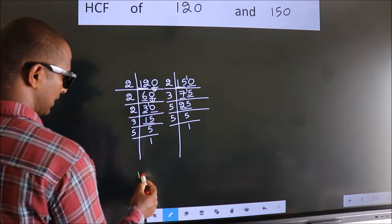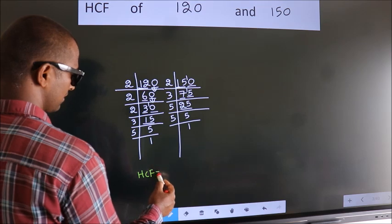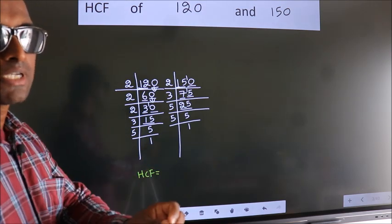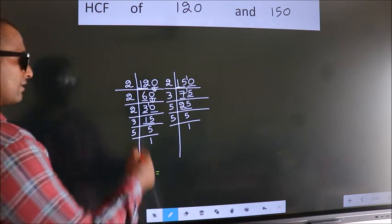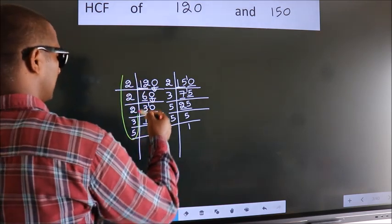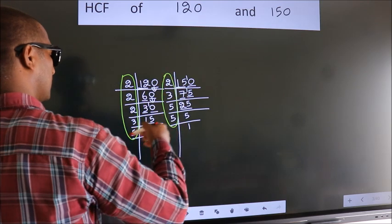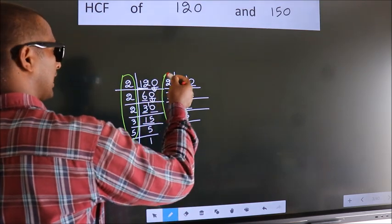Therefore, our HCF is the product of the numbers which should be present over here and also here. Over here and also here.